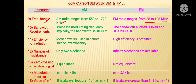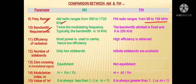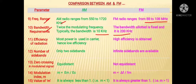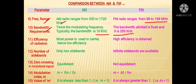About bandwidth requirement, in AM it has twice the modulating frequency, and typically the bandwidth is exactly 10 kHz. In FM, the bandwidth allotted is fixed, and typically it is 200 kHz. As compared to AM, FM has 20 times more bandwidth than AM.